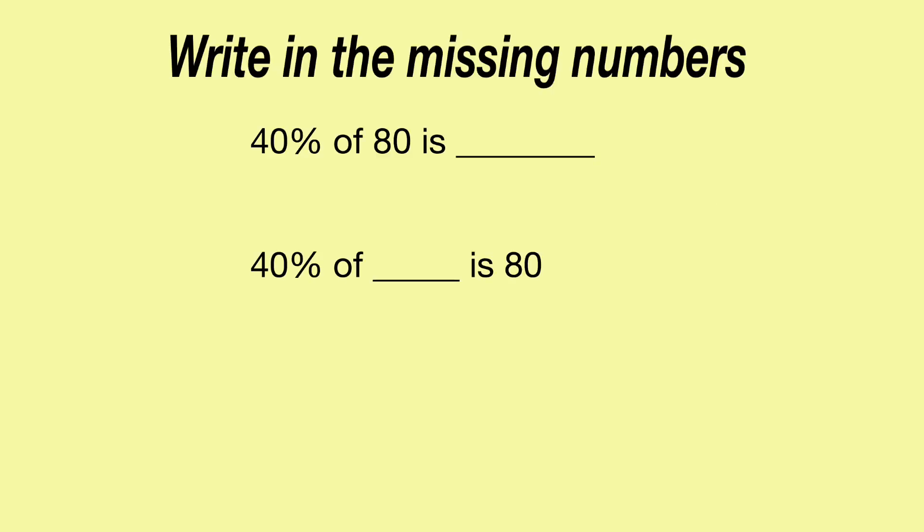So straightforward one to begin with. 40% of 80 is what? So it's nice and easy, it's a percentage of an amount. So 40% of 80. Let's go to my favourite percentage to get to, let's get to 10%. So you need to think of what would 10% of 80 be.